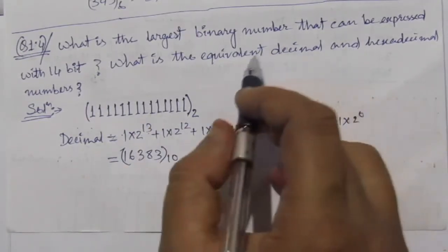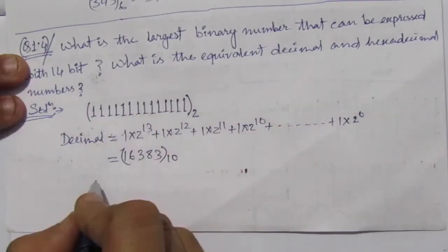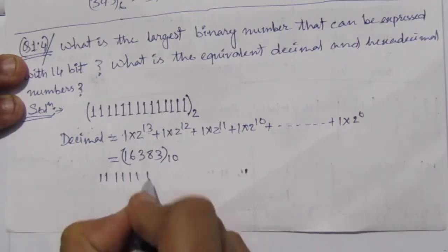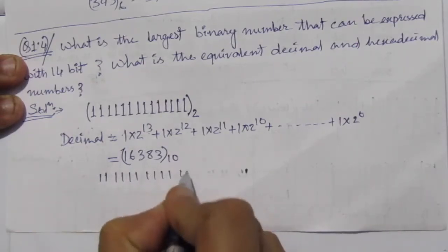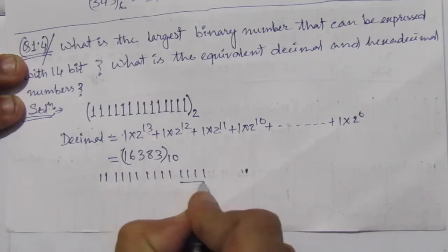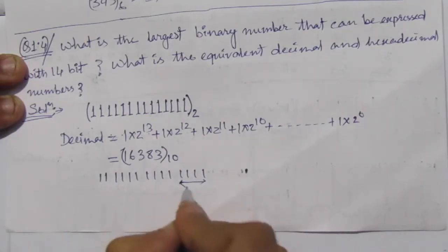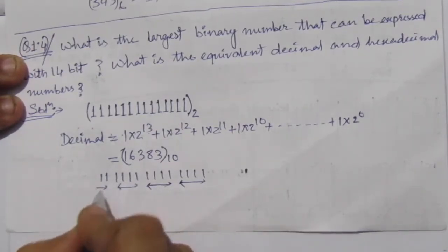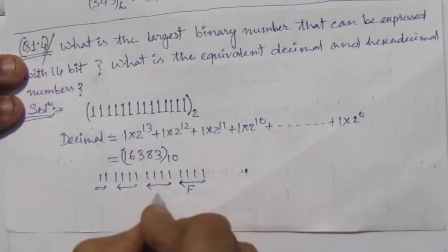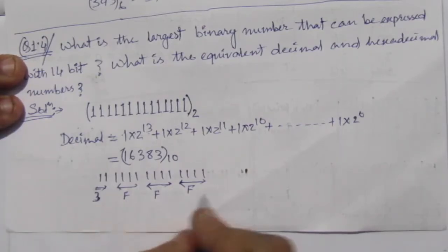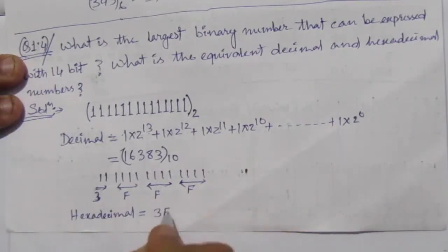The next part is: what is the equivalent hexadecimal number? Write the 14 ones and group them with 4 digits each. There are 14 ones, so you get groups of four — each group of four 1s converts to F in hexadecimal, and the last remaining 2 bits (11) give 3. So the hexadecimal equivalent is 3FFF base 16.